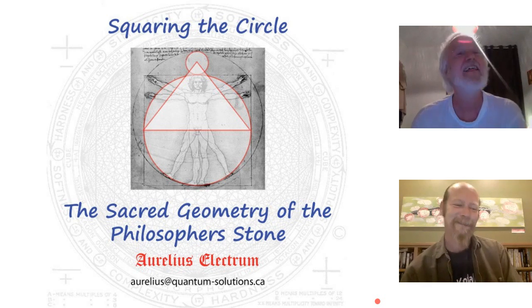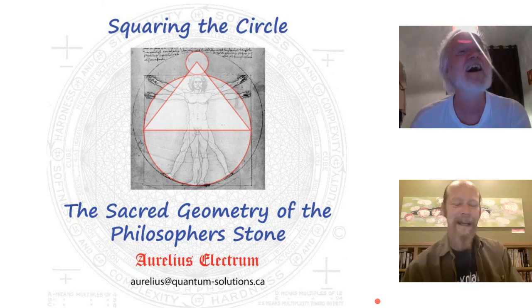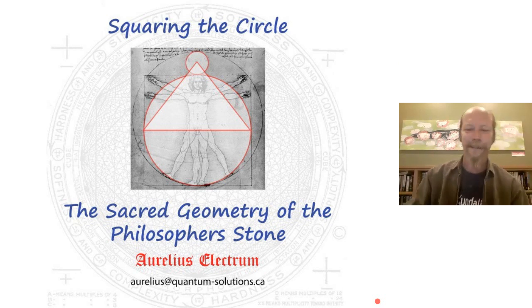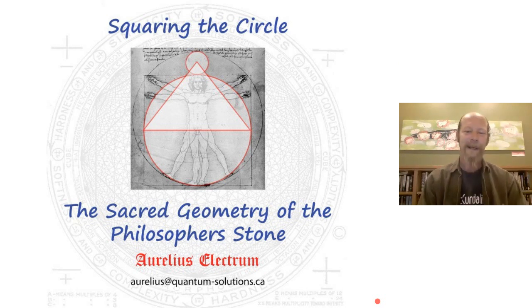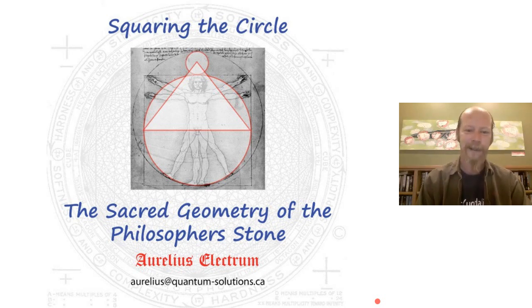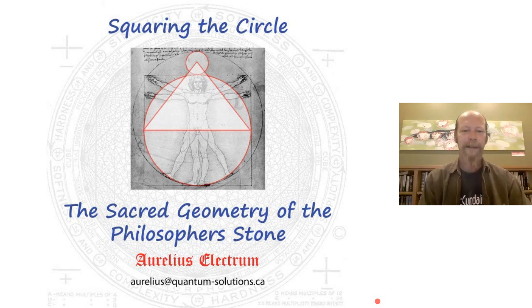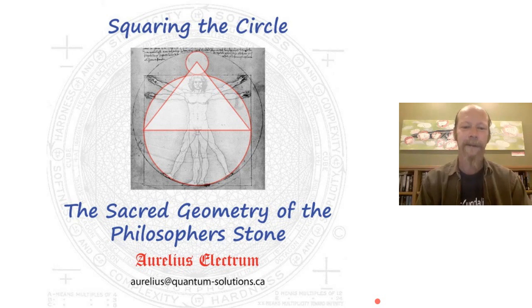Thank you, Dan, for that wonderful introduction. That's really what alchemy is all about — it's a very holistic system where you're integrating everything: mind, body, spirit, and putting all your intention into doing the ultimate perfection, the ultimate transmutation. As much as everybody thinks alchemy is about making gold, it's really about perfecting yourself and by doing that, influencing the environment around you.